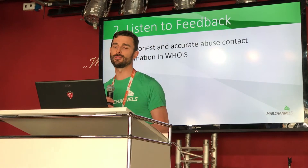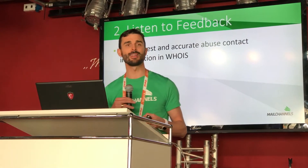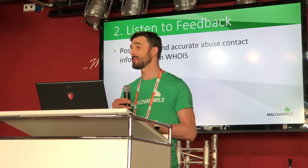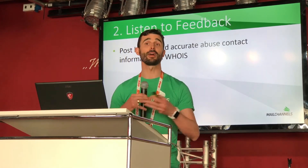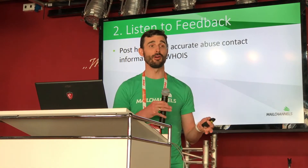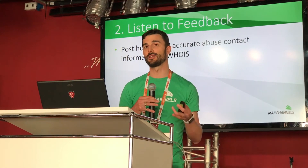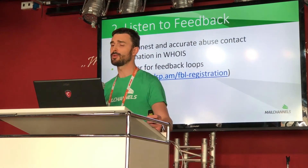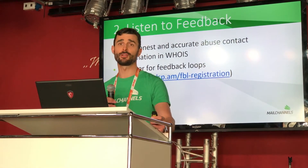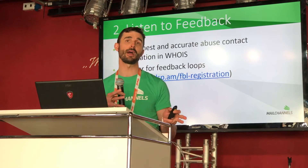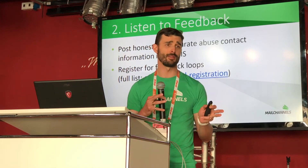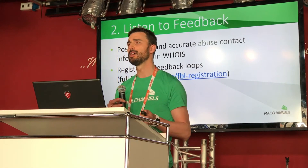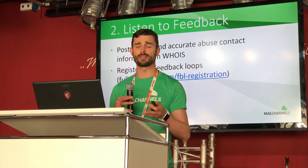The first step is to make sure that you post honest and accurate abuse contact information in the WHOIS records that are associated with your IP addresses. And if you have customers, make sure that they also have accurate abuse contact information in their WHOIS data. Second, you need to register for feedback loops with the major email providers. There are about 20 feedback loops that are absolutely mandatory that you should register for, and this will give you coverage of Microsoft, AOL, Comcast, Cox, Yahoo, and some others.